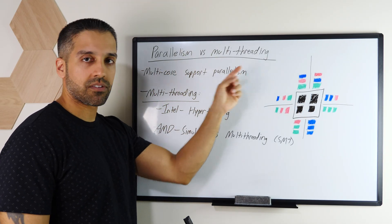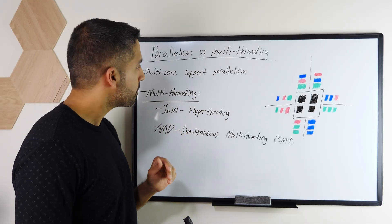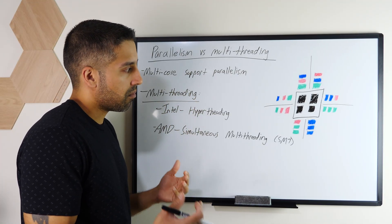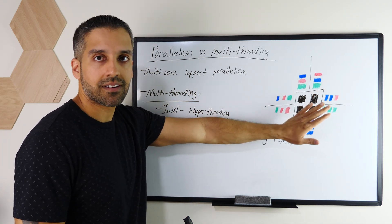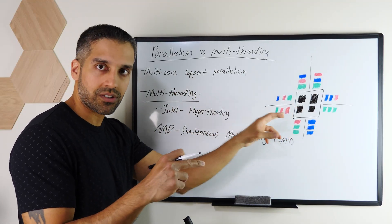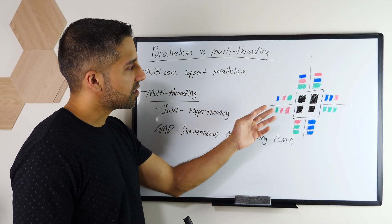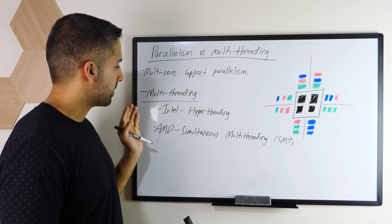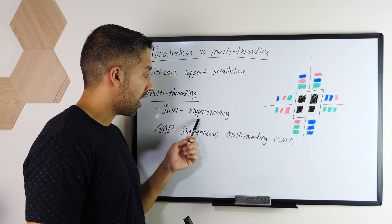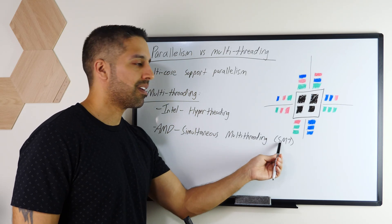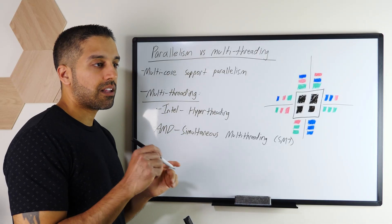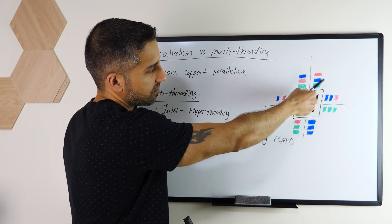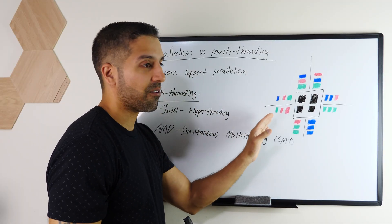Now, parallelism versus multi-threading — there's some overlapping concepts here. Parallelism is inherently supported on multi-core processors: it means working on multiple tasks at the same time by having multiple cores, whether you have multiple threads or not. All four cores in a quad-core are working simultaneously. Without multi-threading, each core only works on one task at a time. To achieve greater efficiency with multi-threading, Intel dubbed their technology hyper-threading and AMD called theirs simultaneous multi-threading, or SMT. These technologies allow simultaneous multi-threading — Core 1 switches between two threads very rapidly.